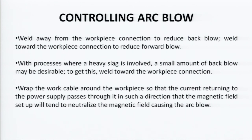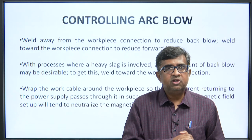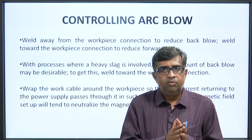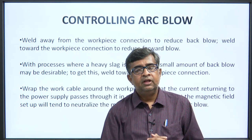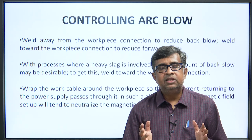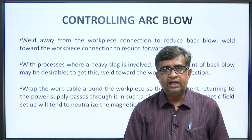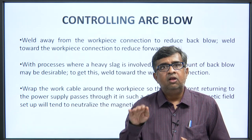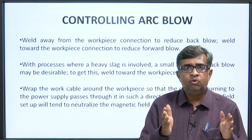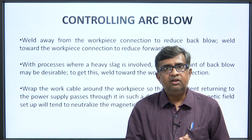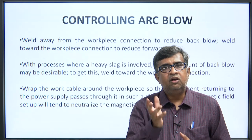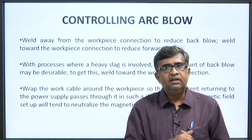With a process where heavy slag is involved, a small amount of back blow may be desirable. Wrap the work cable around the workpiece so that the current returning to the power supply passes through it in a direction such that the magnetic field set up will tend to neutralize the magnetic field causing the arc blow. We have understood how arc blow can be controlled — if we follow these steps it is possible to control arc blows, which have different types of effects on welding.